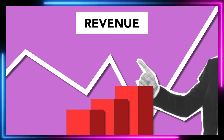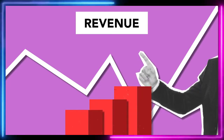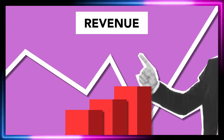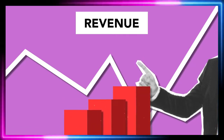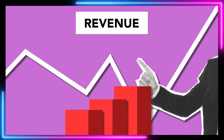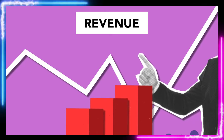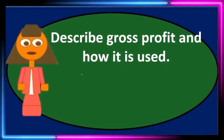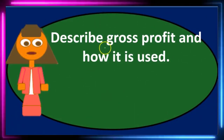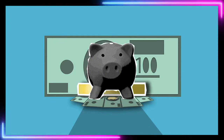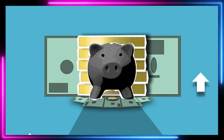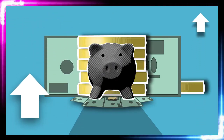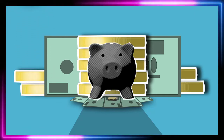Once we have the gross profit, we reduce it by all other operating expenses to get to net income at the bottom of the income statement. Gross profit is one major component — one major step and breakout — that we will have in the multi-step income statement along the path to net income.